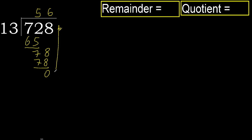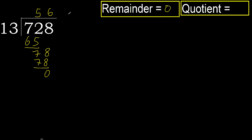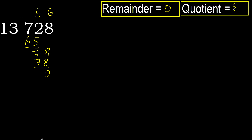There is no next number, therefore finish it. 0, therefore 728 divided by 13 is here. Thank you.